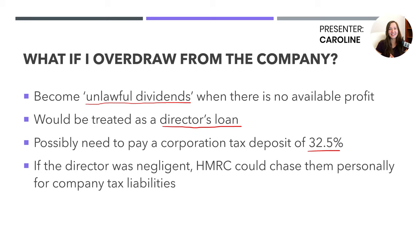There's also the risk that if HMRC suspects the director was negligent, and that is why the company couldn't afford to pay its tax liabilities, they could come after them personally for company taxes. If you're using accounting software, make sure it's fully up to date before you take any dividends, because if you miss something and later find out you couldn't actually distribute that level of dividends, it could cause problems with paying tax. So be careful and make sure everything is accounted for.